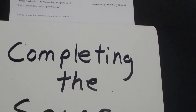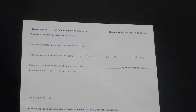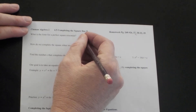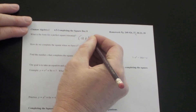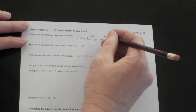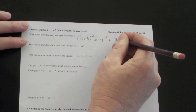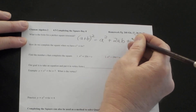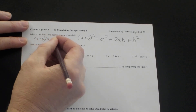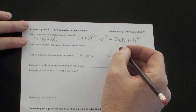The first part of the notes is: what is the form of a perfect square trinomial? You have a binomial and if you square that you get your perfect square trinomial — that's a squared plus 2ab plus b squared. We could put (a + b)(a + b) together and FOIL that out, and this is what we get. So here is the form of a perfect square trinomial.